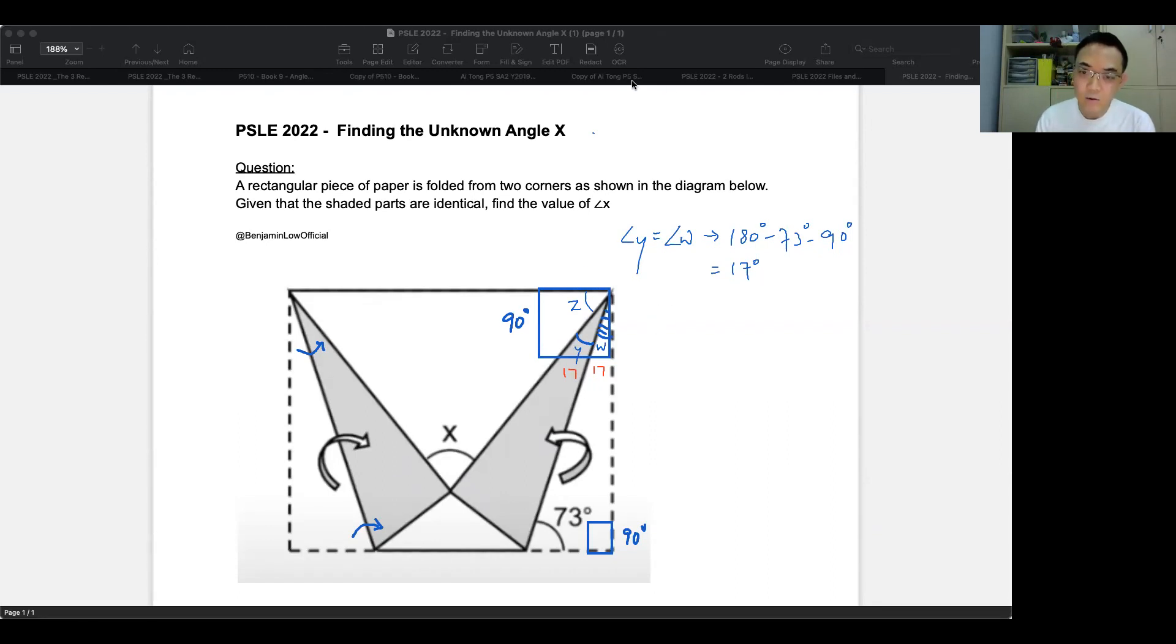So to find angle Z, all I have to do is now take 90 degrees, which is the total, and subtract away Y and W. So that's what I'm going to do now. So angle Z is 90 degrees minus 17 degrees times two, or if you prefer, you can put it either way, it doesn't really matter.